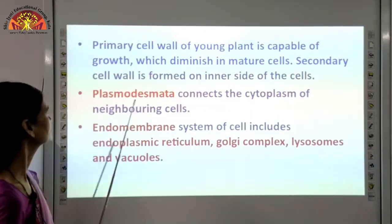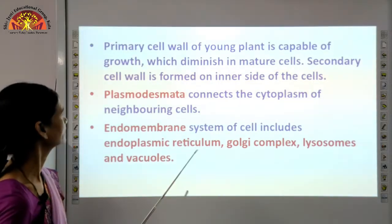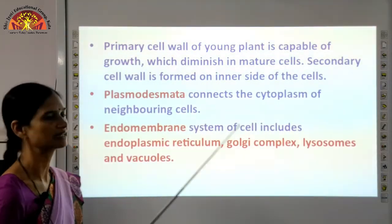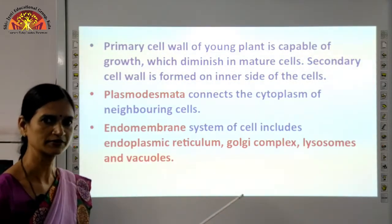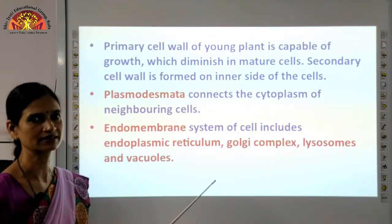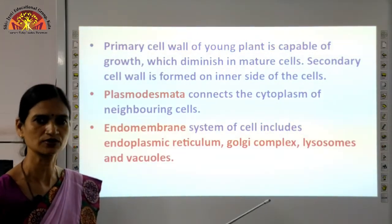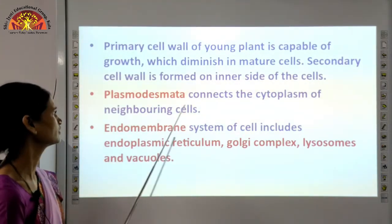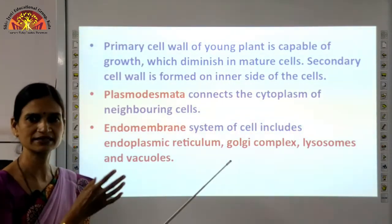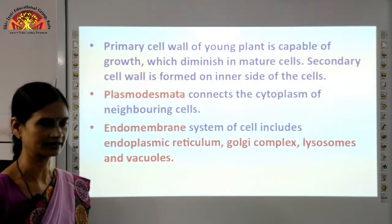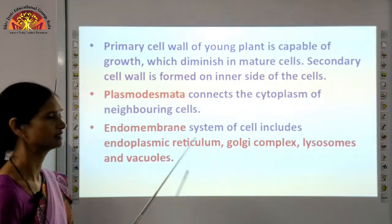The primary cell wall of young plants is capable of growth, which diminishes in the mature cell. Secondary cell wall is formed on the inner side of cells. Plasmodesmata connect the cytoplasm of neighboring cells. Now we come to the endomembrane system in eukaryotic cells. This includes all the organelles present inside the cell membrane — endoplasmic reticulum, Golgi complex, lysosomes, and vacuoles.